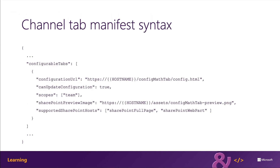These properties can be used to implement tab-to-tab communication using the concept of deep linking. Channel tabs are defined within the Microsoft Teams app manifest file's configurable tabs collection. The configuration URL property is the HTTPS URL to use when configuring the tab, and is required. The can update configuration property indicates whether an instance of the tab's configuration can be updated by the user after creation, defaulting to true. The scopes property is a required array of scopes — either team or group chat. The SharePoint preview image and supported SharePoint host properties are optional, used to make the tab available as a web part or full app page within SharePoint sites.